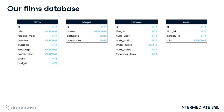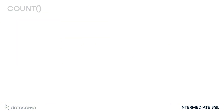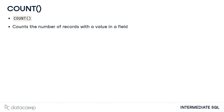Our database schema, pictured here, shows the table names, field names, and data types. Here we go with our first new keyword. Let's say we wanted to count something from our people table.